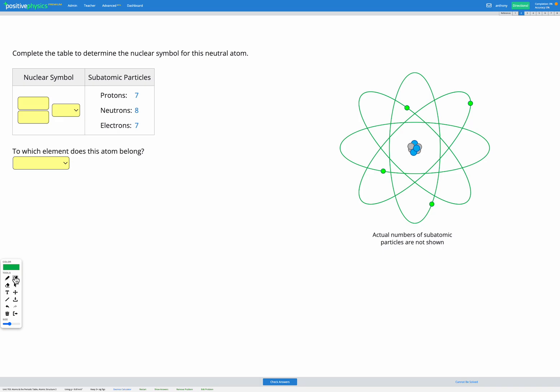In this question, we're given the subatomic particles, so we're given the number of protons, the number of neutrons, and the number of electrons, and we're going to use that to find the nuclear symbol for this atom.